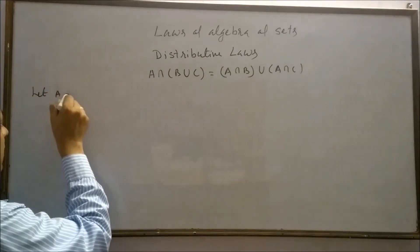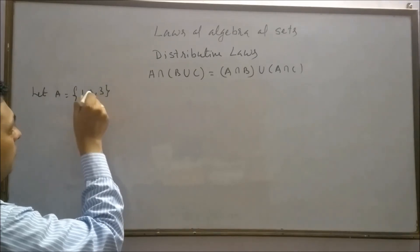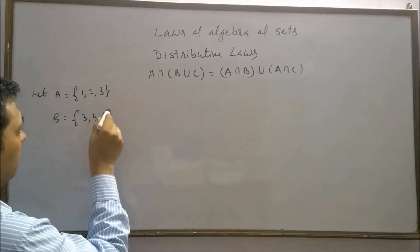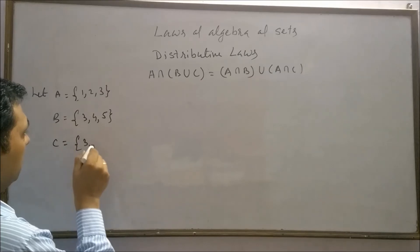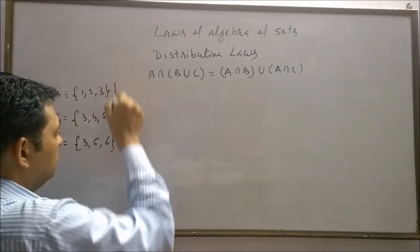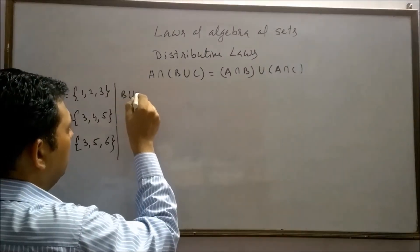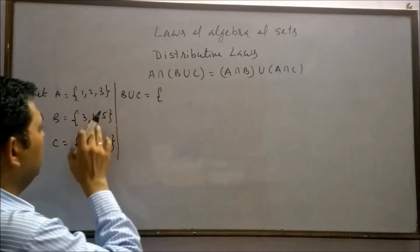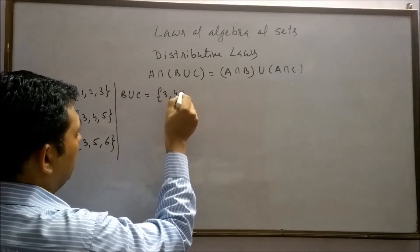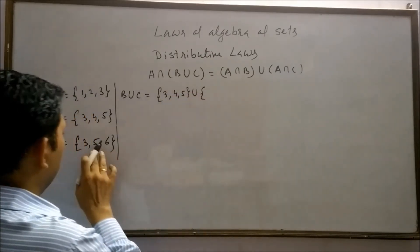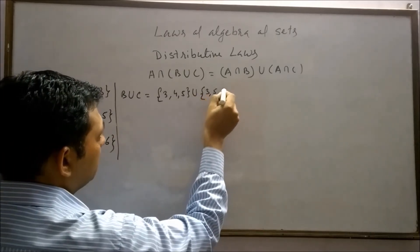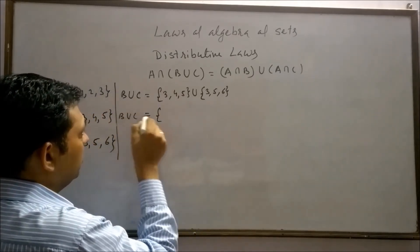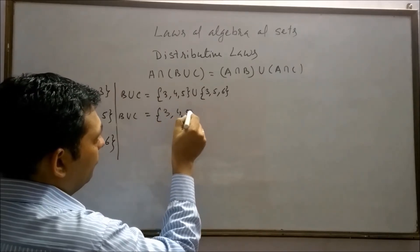Let set A = {1, 2, 3}, set B = {3, 4, 5}, and set C = {3, 5, 6}. Now we find B union C. B = {3, 4, 5} and C = {3, 5, 6}, therefore B union C = {3, 4, 5, 6}.